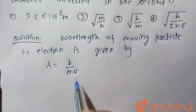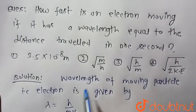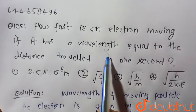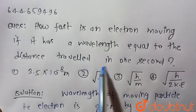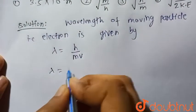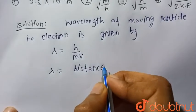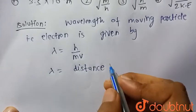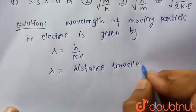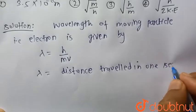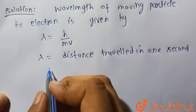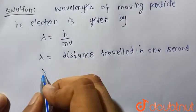So we have to find the speed of an electron moving with the wavelength equal to the distance travelled in one second. It is given that lambda is equal to distance travelled in one second. Distance travelled in one second is velocity.